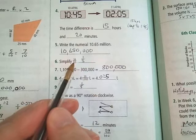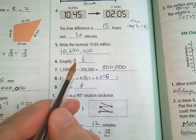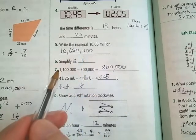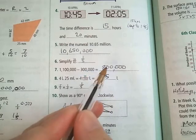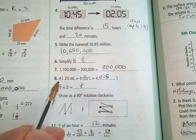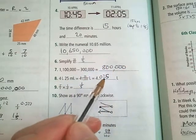Simplify 20 over 60: 2 over 6, 1 over 3. 1,100,000 take away 300,000 is 800,000. 4 liters and 25 milliliters is 4.025 liters.